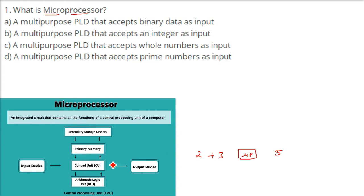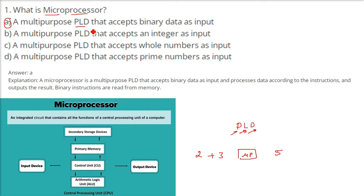Whenever you see a computer, the cabinet inside has a processor. All the answer options here have PLD, which means Programmable Logic Device. The answer is that a microprocessor is a multi-purpose PLD that accepts binary data as input, processes the data according to the instruction given, and then outputs the result.